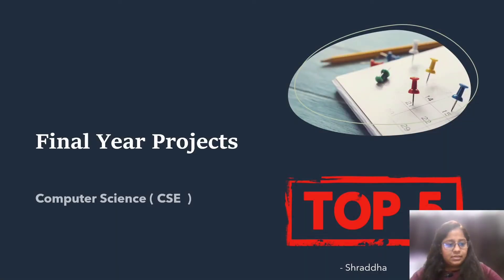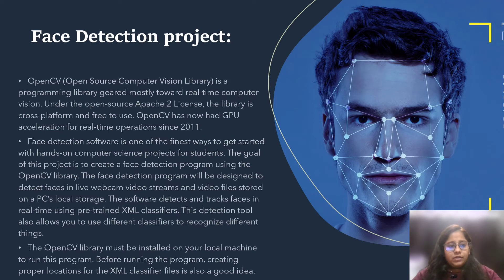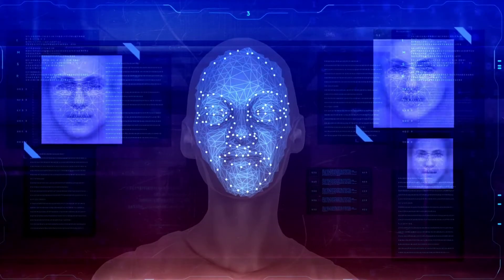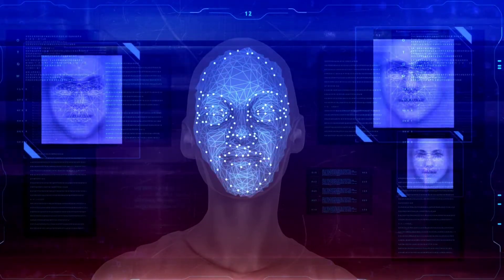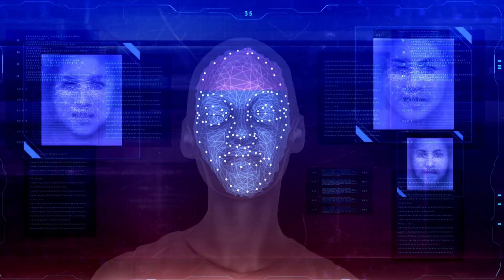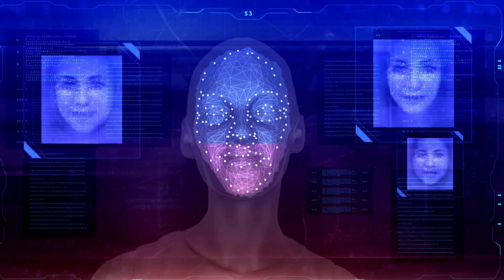Here we are going to see the final year projects for CSE. Our first project is a Face Detection project. In the Face Detection project, we are going to use the OpenCV library — OpenCV means Open Source Computer Vision library, which is geared mostly towards real-time computer vision. There are five major steps: first, install the libraries; second, detect the faces; third, gather the data; fourth, train the data; and fifth, start recognizing.